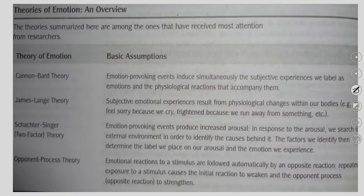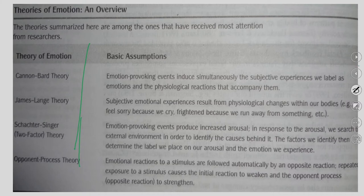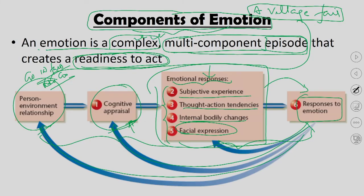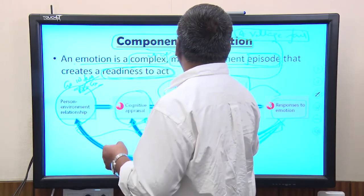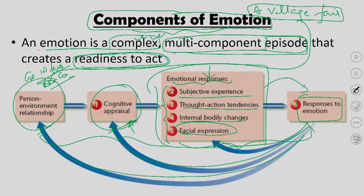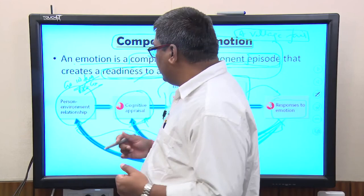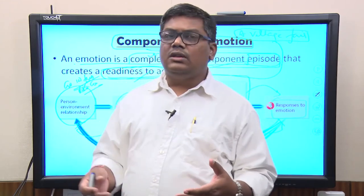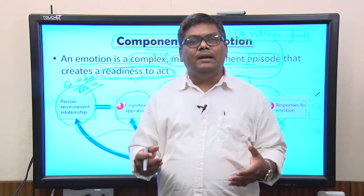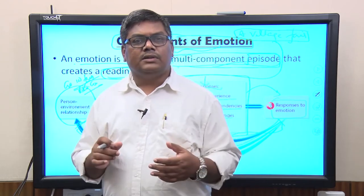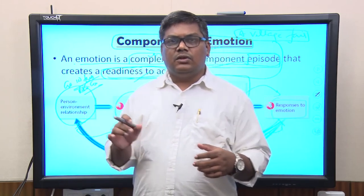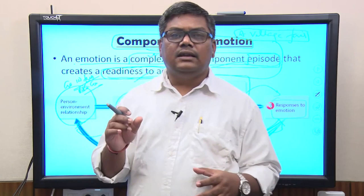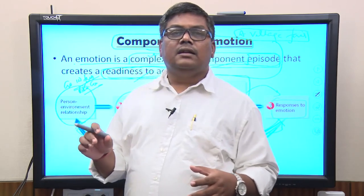What we are going to do today is continue from here and understand the whole multi-component process of emotion, how these processes integrate together to generate emotion, and how these emotions actually shape behavior. Let us go back to the idea of how emotion really starts — the multi-component process of emotion. Emotion is a complex multi-component episode that makes you act, so behavior is controlled by emotion.